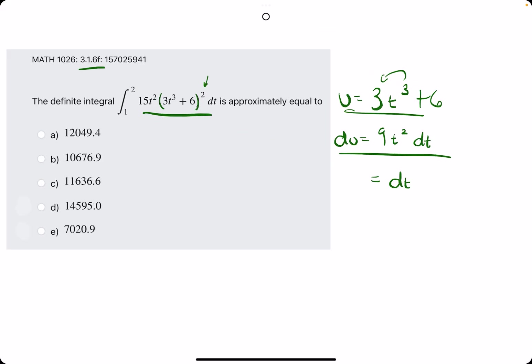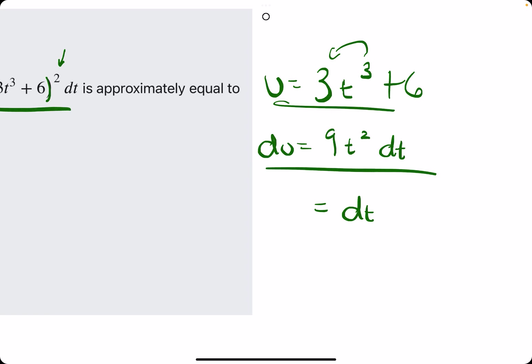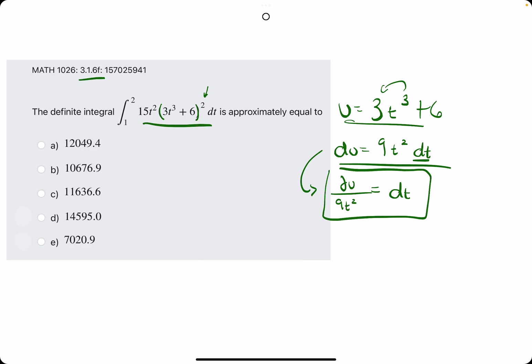So all together we have 9t², and then 6 goes to 0, since it's a constant. We often mention tacking on a dt to the du term. So we will do that here. Then, as a nice habit, let's solve for dt. Get dt by itself on the right side of this equation. So, rewriting this equation, we have du over 9t² equals dt.